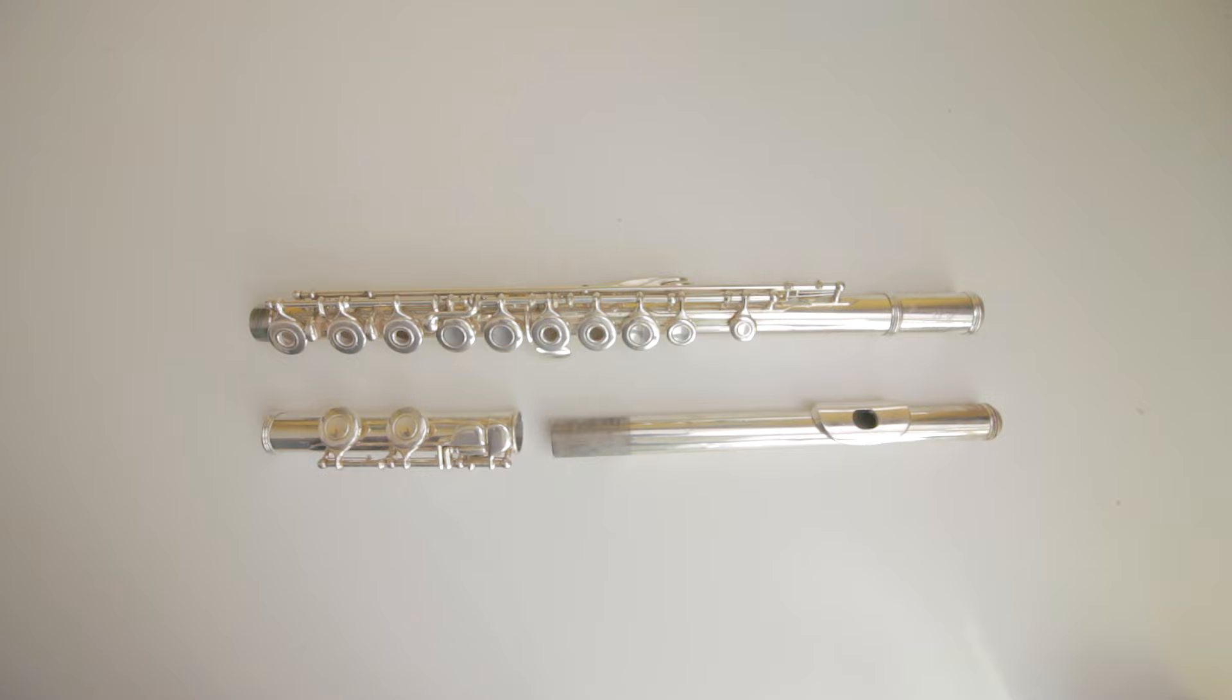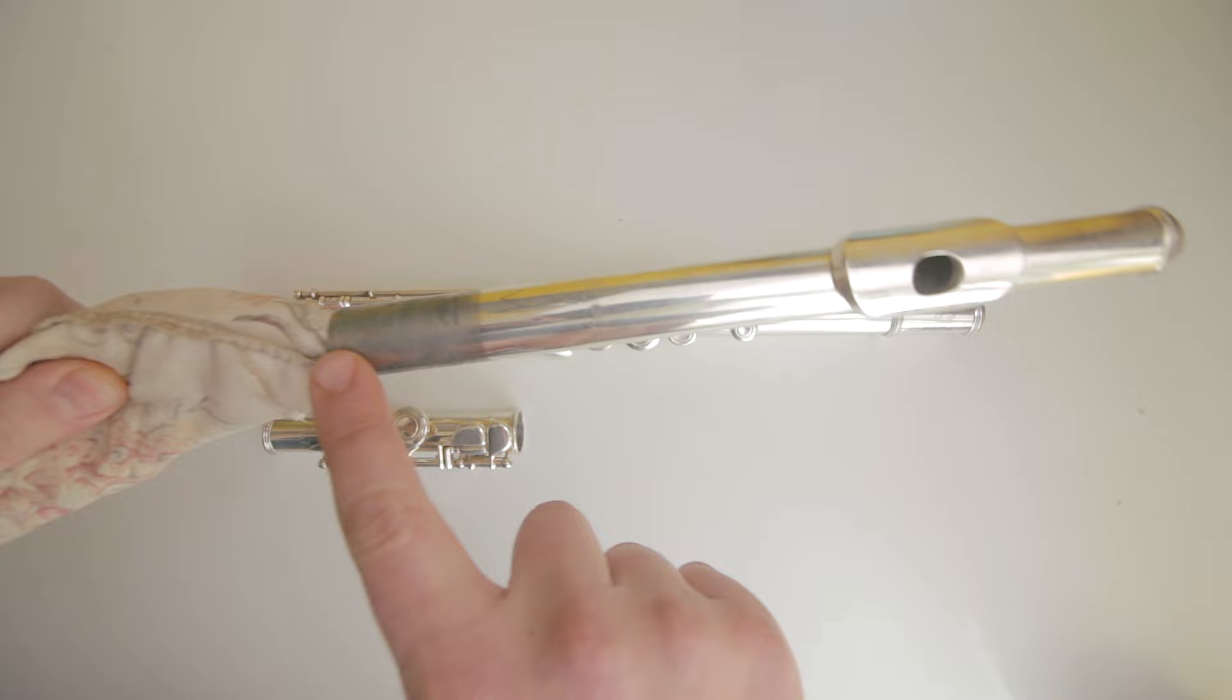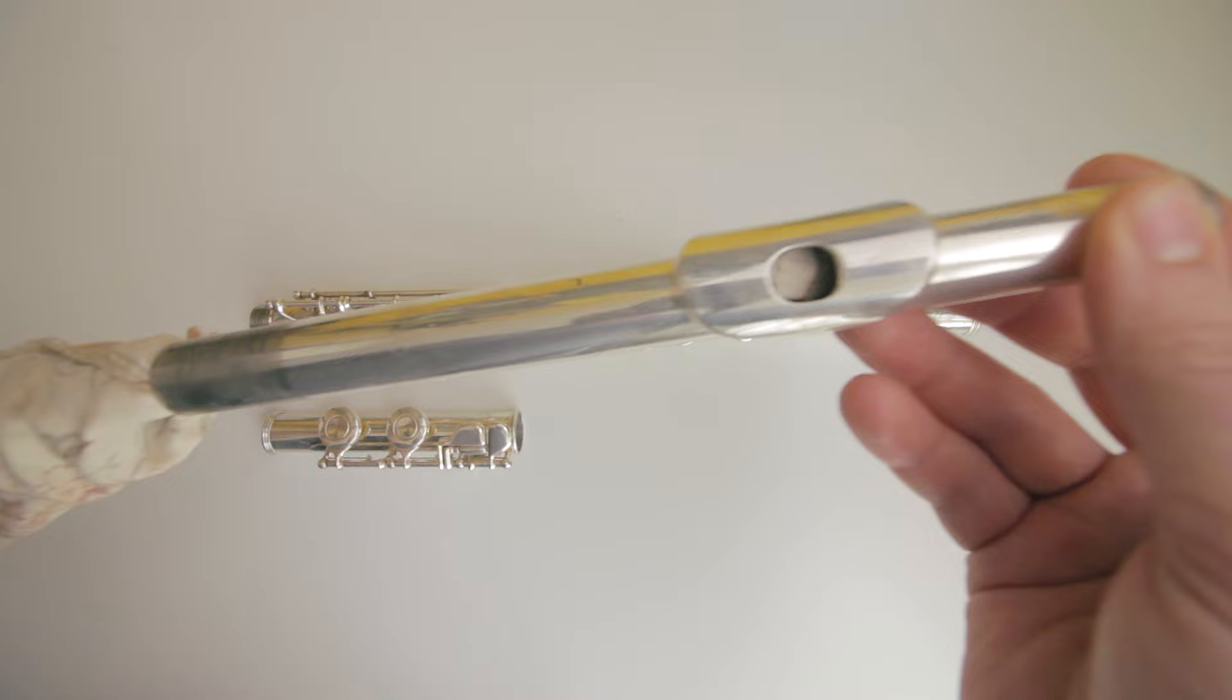Now you'll want to start with the head joint first. Grab the head joint, go in there, right in the bottom of the head joint there. Bring it up, but not pushing. Don't push too hard at all. Just bring it lightly up to where the cork begins. Do a little turn with the head joint.